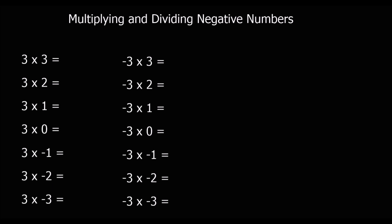Here I want to show you the rules for multiplying and dividing negative numbers. To do this, I'm going to go through each of these sums individually, and then we'll look at the patterns that come out of it. So 3 times 3 is 9.